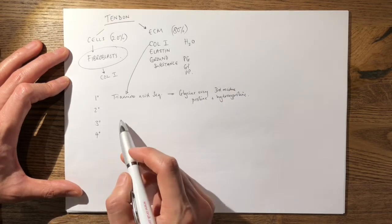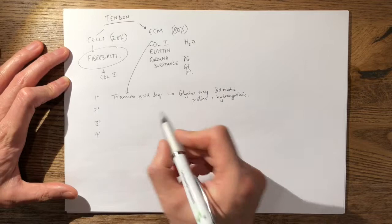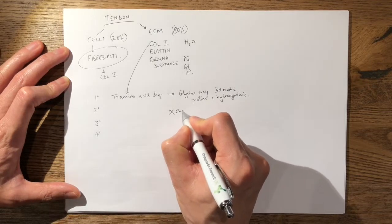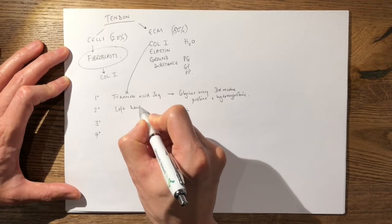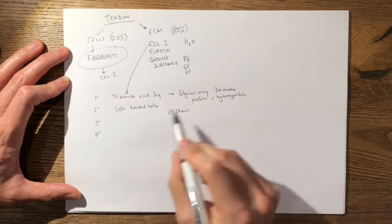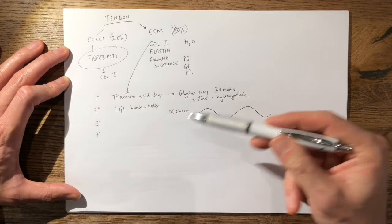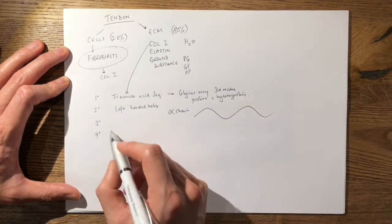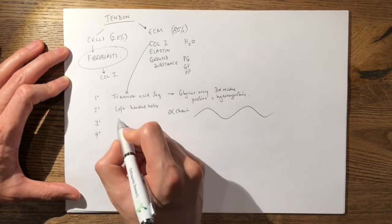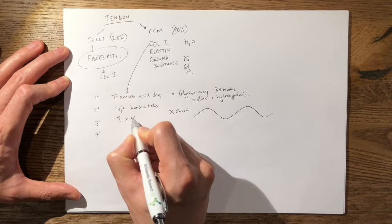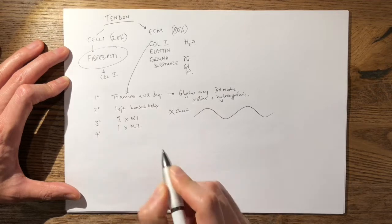Moving on to its secondary structure: the tri-amino acid sequence forms an alpha chain. The alpha chain is a left-handed helix. Moving on to the tertiary structure, it is formed of three alpha chains — two are identical alpha-1 chains, and one is slightly different, called an alpha-2 chain.